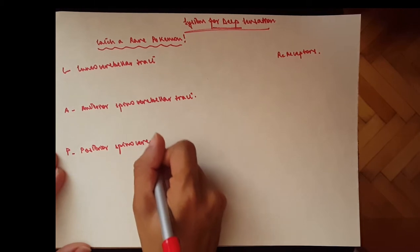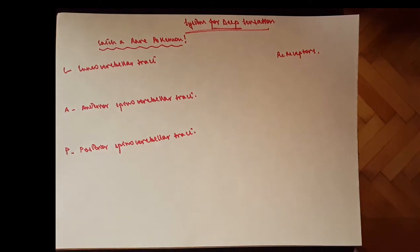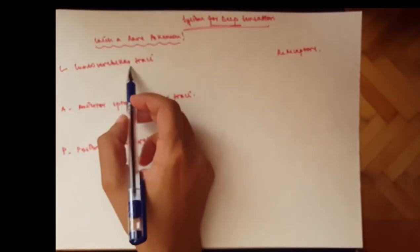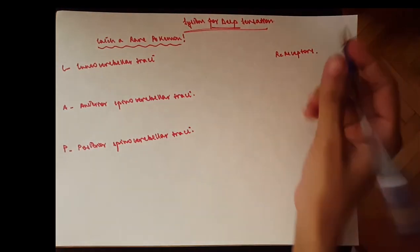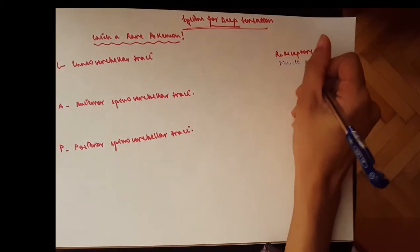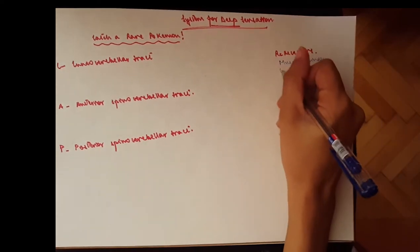Okay, now let's get started. All right, so we start with the cuneocerebellar tract, or rather with the receptors. So the receptors here would be the proprioception. We have the muscle spindles and you have the Golgi tendon organs.